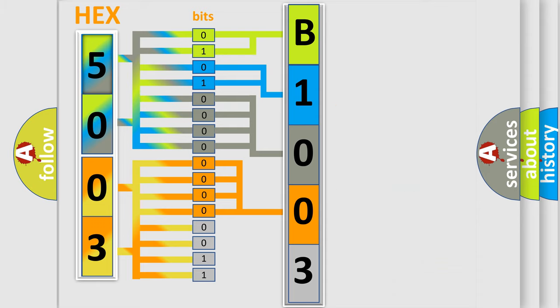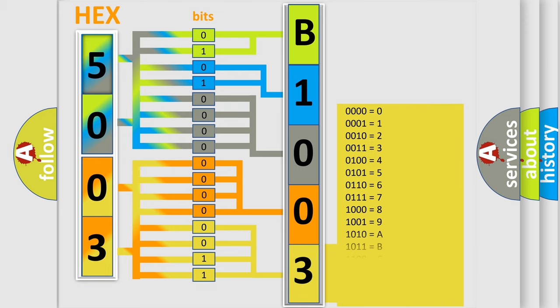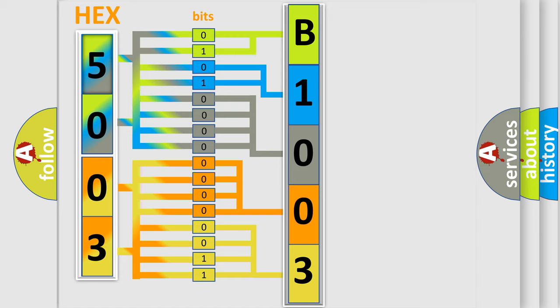A single byte conceals 256 possible combinations. We now know in what way the diagnostic tool translates the received information into a more comprehensible format.